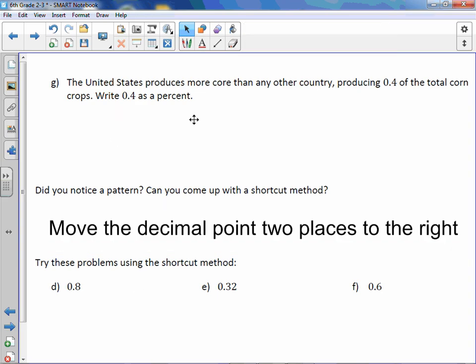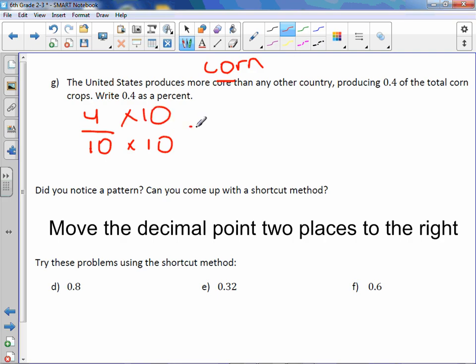Before we use that shortcut method, let's look at letter G. The United States produces more corn than any other country producing corn, 0.4 of the total corn crops. Write 0.4 as a percent. I'm going to write it as 4 tenths. I need to make the denominator 100, so I'll multiply both by 10, and I would get 40 over 100. Now we can just look at the numerator - our percent is 40%.